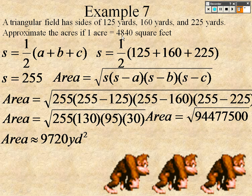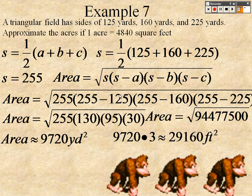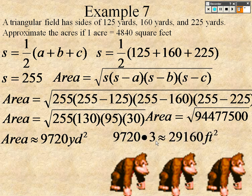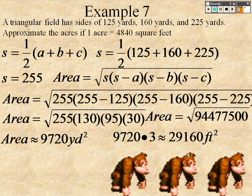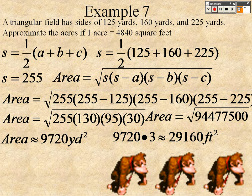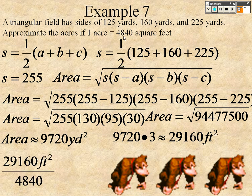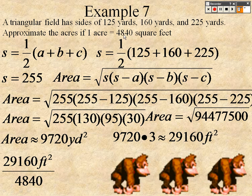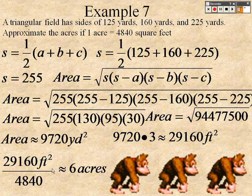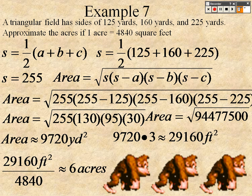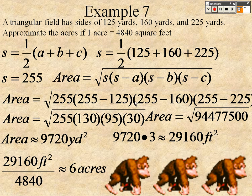But we want to know what it is in feet. So yards, there's three feet in the yard, so I times that by three, so it's 29,160 feet squared. And that's how many feet there are, but it says one acre equals 4840, so I divide that by 4840, figure out how many acres that is, and it's about six acres of land then. So all that using Heron's formula.